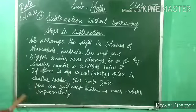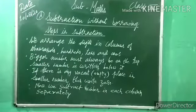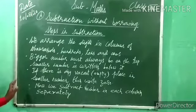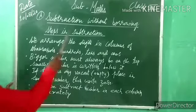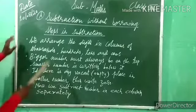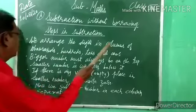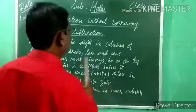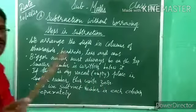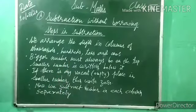Now there are 4 steps in subtraction. According to these steps we have to solve subtraction examples. First step: we arrange the digits in columns of 1s, 10s, 100s, 1000s — and for 5-digit numbers up to 10,000.